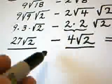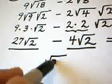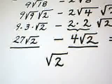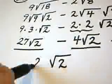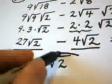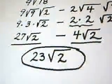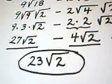The square root of 2 is the like part. And, to get the new coefficient, 27 minus 4 becomes 23. And, there's our answer. 23 radical 2.